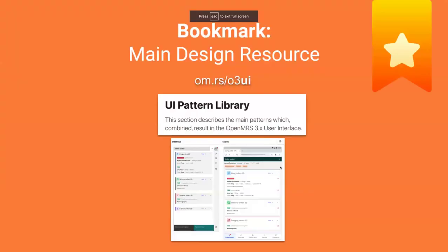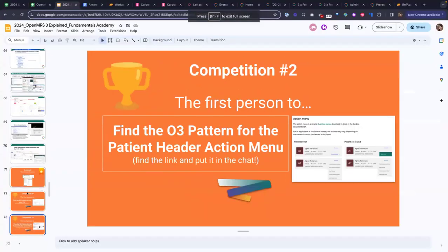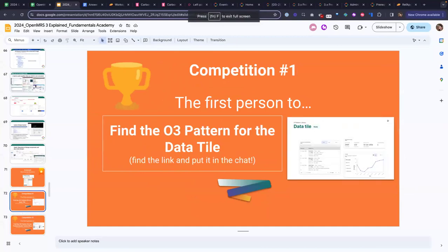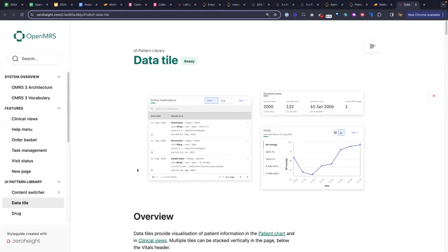We are almost at the competition. Competition number one: the first person to find the O3 UI pattern for the data tile — if you can find the web link and put it in the chat, the first person to successfully do that wins. We've already got a submission from Marion B. Let's go ahead and look at the link she shared. Marion, you win the first competition — bravo!